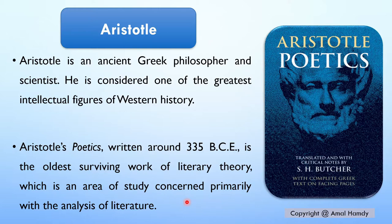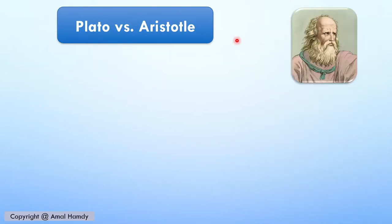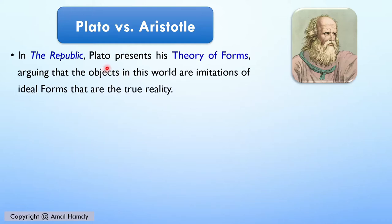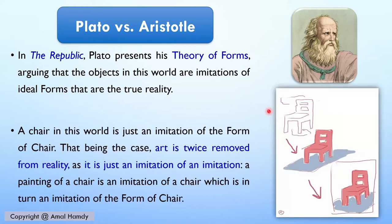Mimesis means imitation. Aristotle's Poetics was preceded by Plato's The Republic. In The Republic, Plato presents his theory of forms, arguing that the objects in this world are imitations of ideal forms that are the true reality. For example, according to Plato, a chair in our material world is just an imitation of the form of the chair in the ideal world of forms.